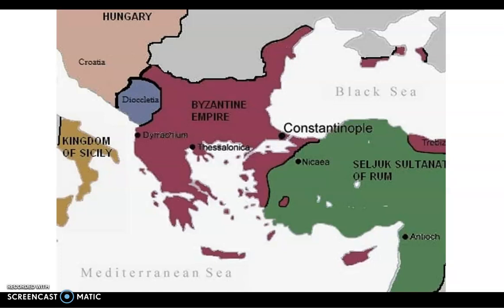In 1086, which is nine years before the emperor wrote to the Pope, the Seljuk Turks had taken Antioch. So we're talking about events and the capture of this land well before this letter was sent. It wasn't like the Islamic world had taken this land and the emperor panicked and suddenly wrote to the Pope — we're talking a good 20 to 25 years. So if I was doing this as a 10-mark question, I'd say it can't be the main reason why the emperor wrote to the Pope, because clearly this land had been taken 20 years previously.